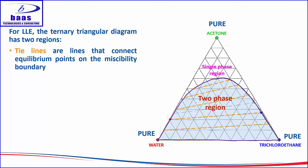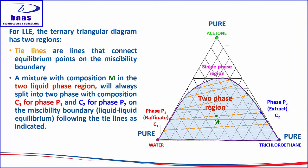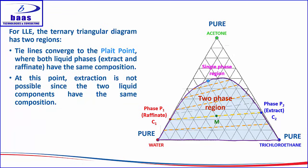Within the two-phase region, tie lines connect the equilibrium points on the miscibility boundary. A mixture with composition M in the two liquid phase region will always split into two phases: phase 1 with composition C1 and phase 2 with composition C2. There is also a point called the plait point on the ternary diagram. Moving along the tie lines toward the top of the two-phase region, you reach the plait point where the tie lines disappear. At this point you still have two liquid phases, however the two phases have the same composition — analogous to an azeotrope in vapor-liquid equilibrium.